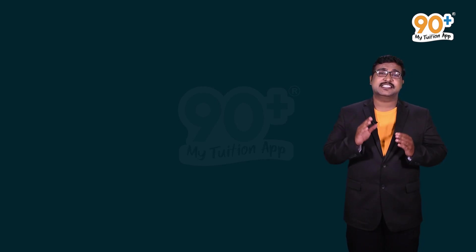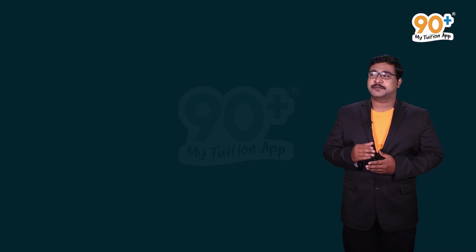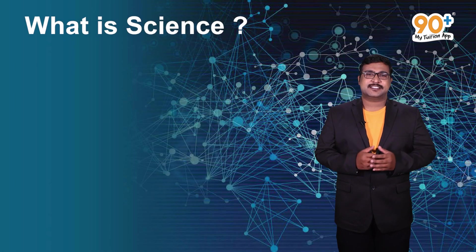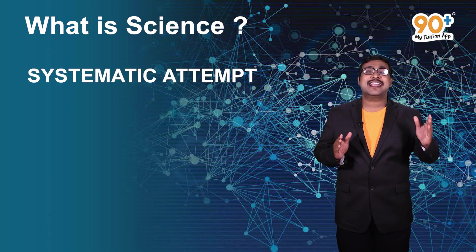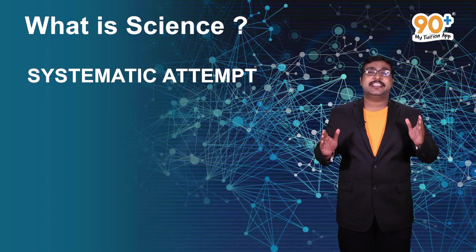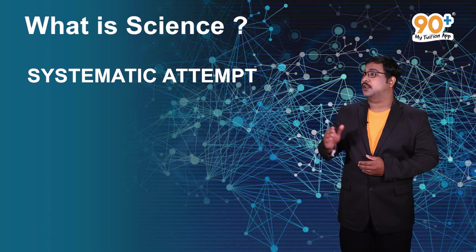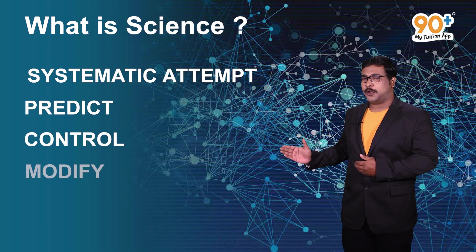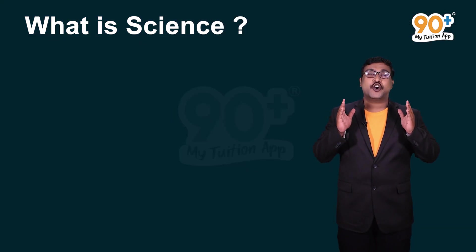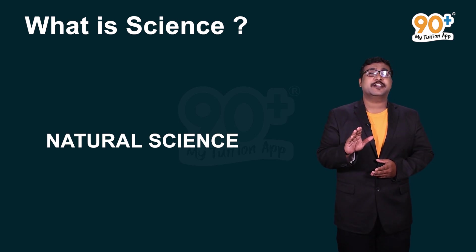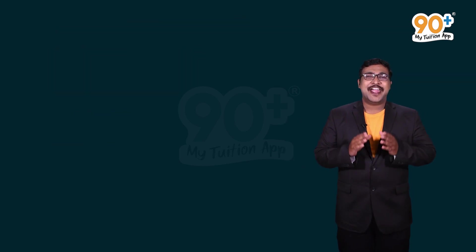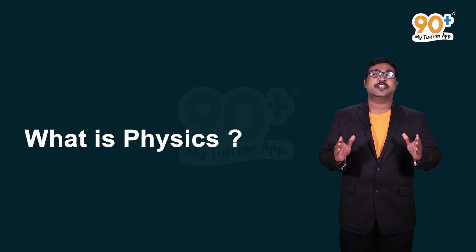Do you know the word 'physics' is derived from a Greek word 'physica' which means nature? Science is a systematic attempt to understand natural phenomena. The knowledge we get from this understanding is used to predict, control, and modify a natural situation. The study of the physical world is called natural science, and it is divided into three parts: physics, chemistry, and biology.